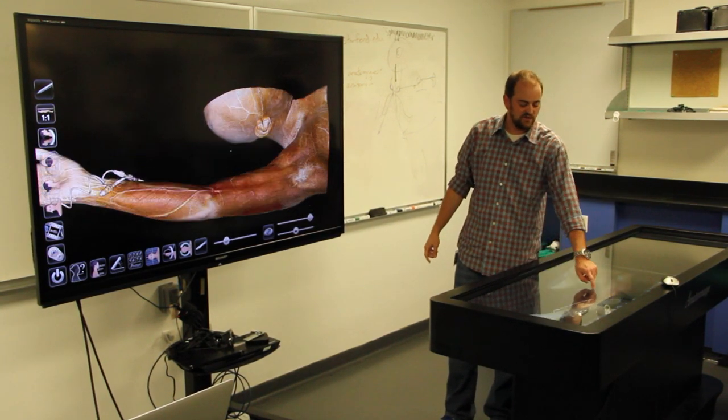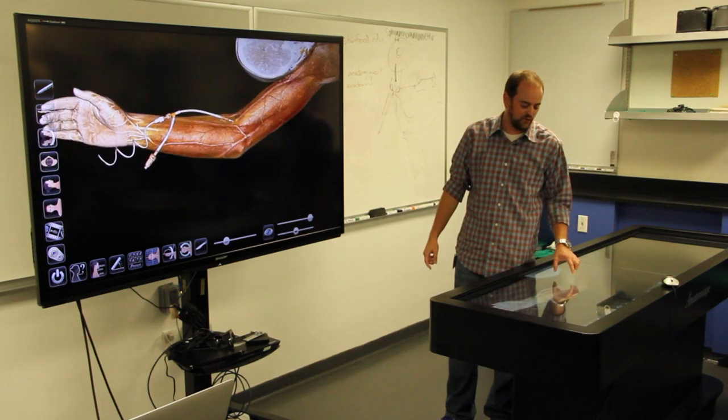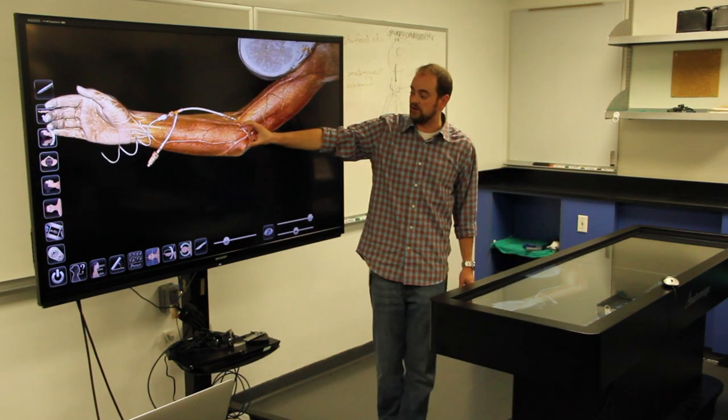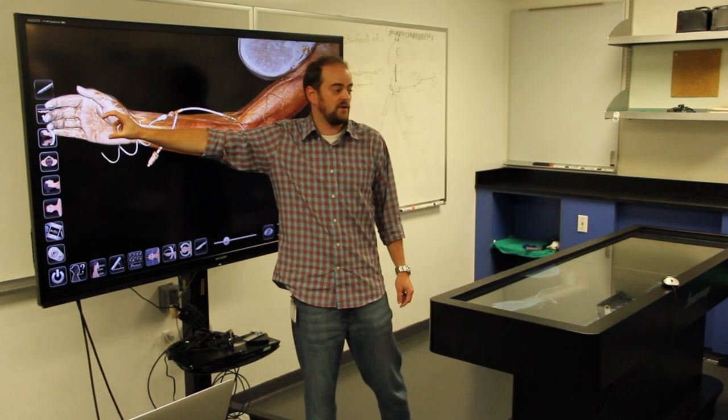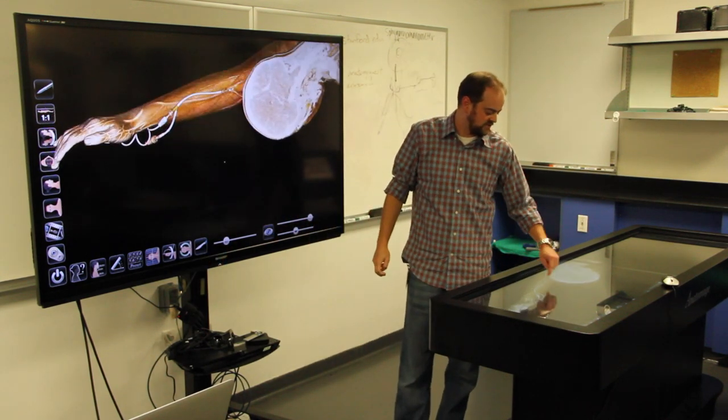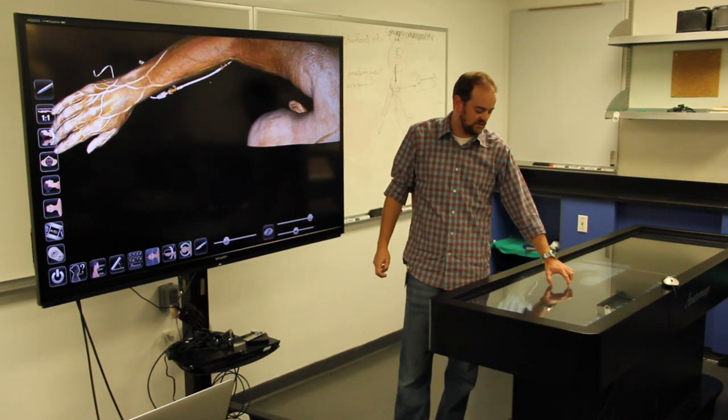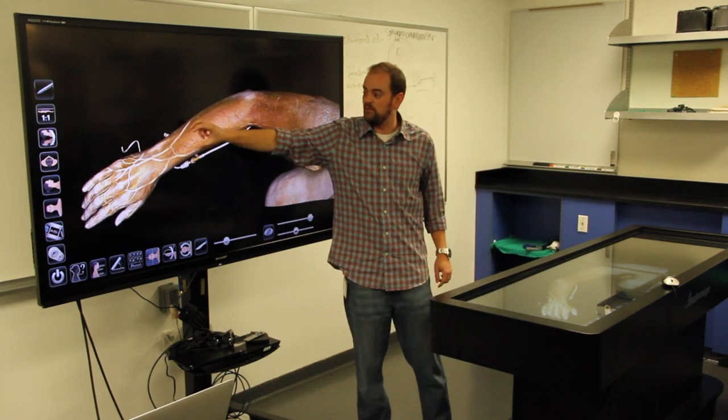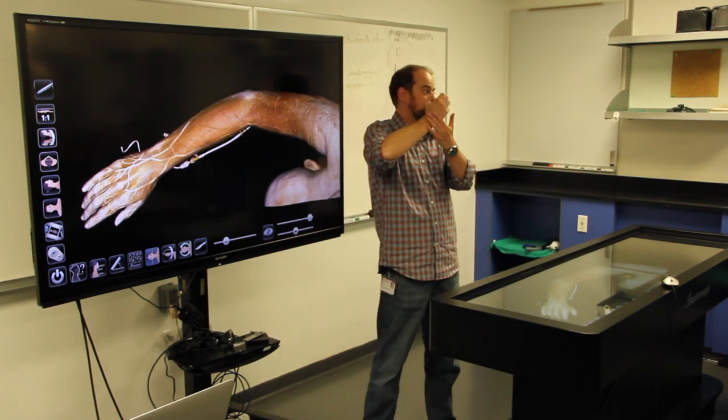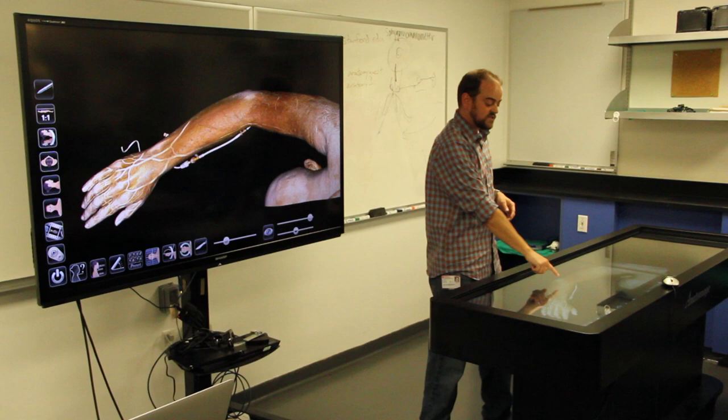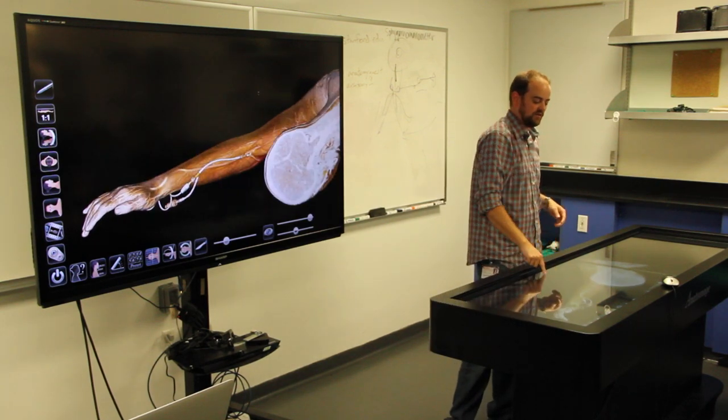We can also see the basic grouping pattern for the forearm flexors here. Then you're going to start medially with the tendons coming into the palm of the hand, whereas the extensors would start laterally and then come back to the dorsum of the hand or the back of the hand. So we'll see this more when we talk about this.